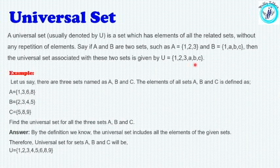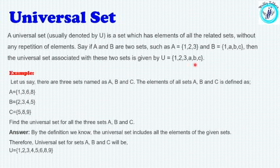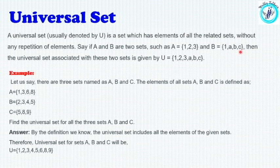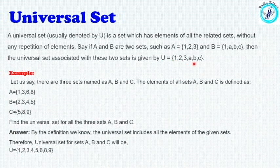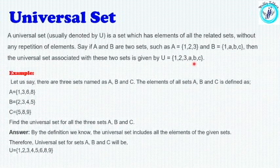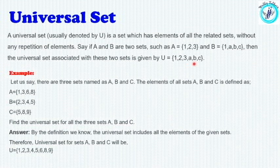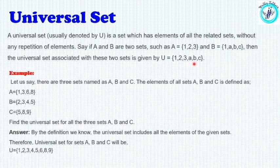To simplify: if set A is {1, 2, 3} and set B is {1, A, B, C}, then the universal set of these two sets is given by U = {1, 2, 3, A, B, C}.